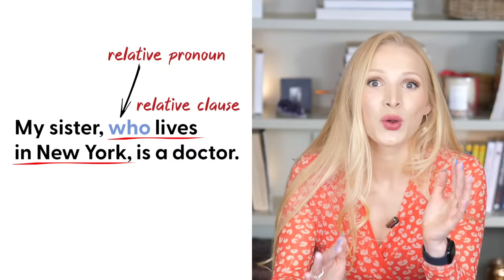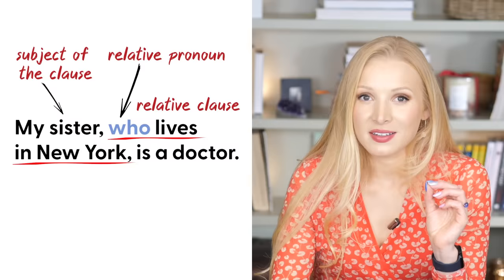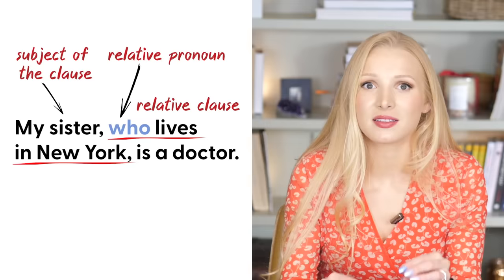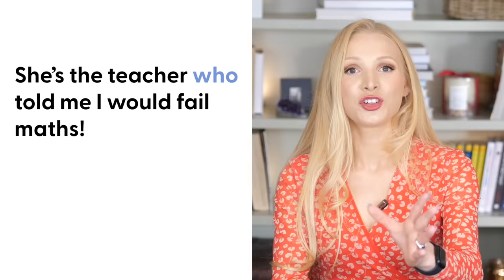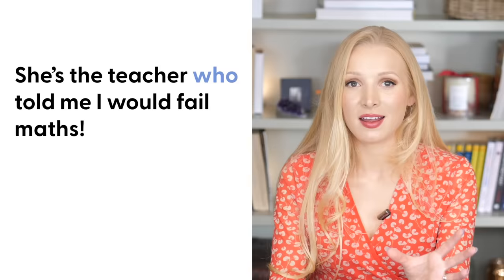Who is a relative pronoun that we use to refer to the subject of the clause. To check if you're using a relative clause correctly, you can remove it and see if the sentence still makes sense. My sister is a doctor — it makes sense. You can also isolate the who clause and insert she: She lives in New York. Another example: She is the teacher who told me I would fail maths. We can replace who with she: She told me I would fail maths. It still works.